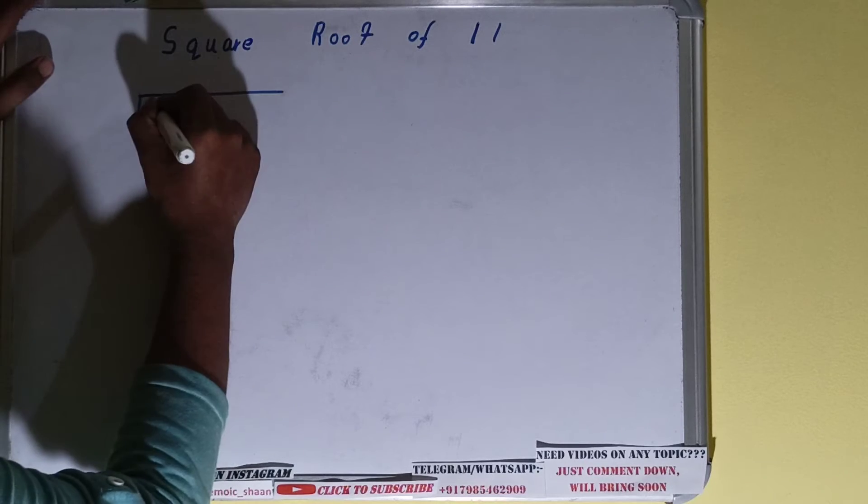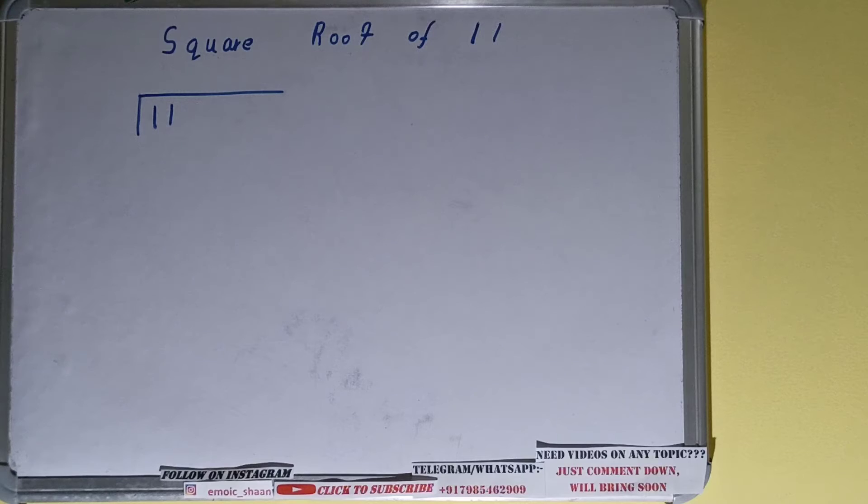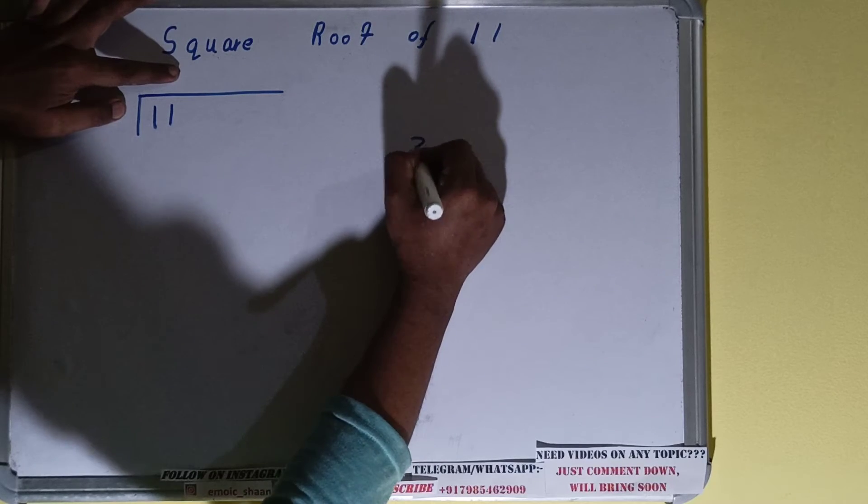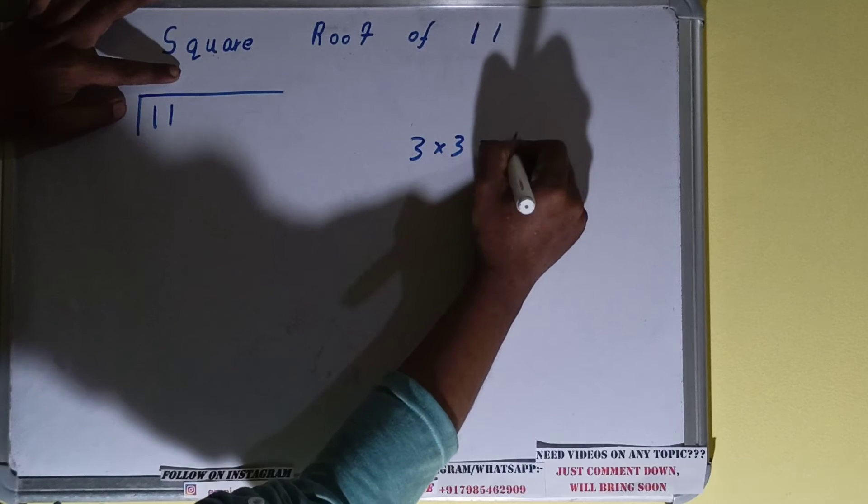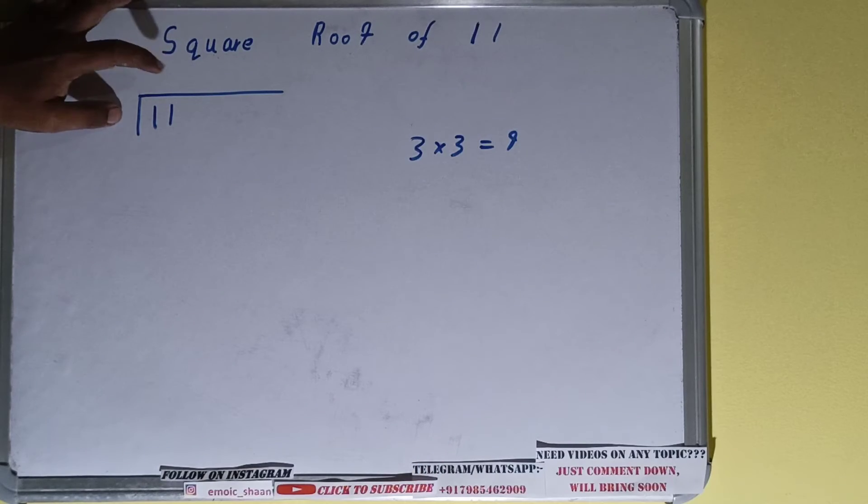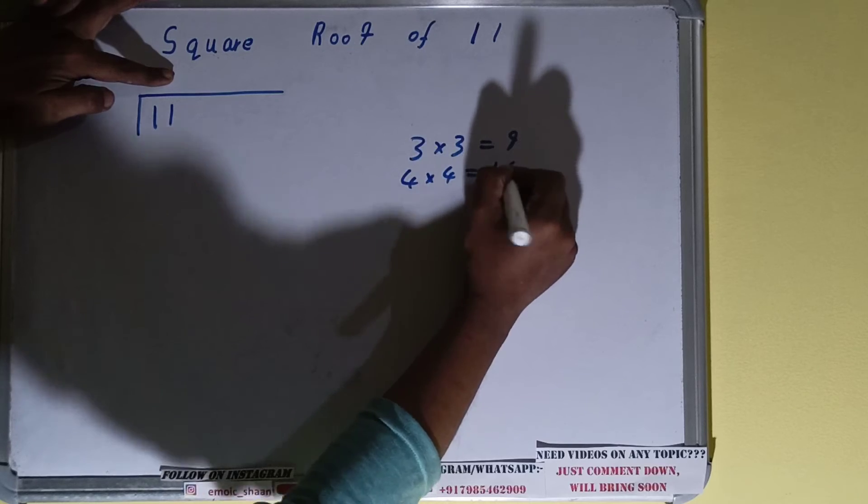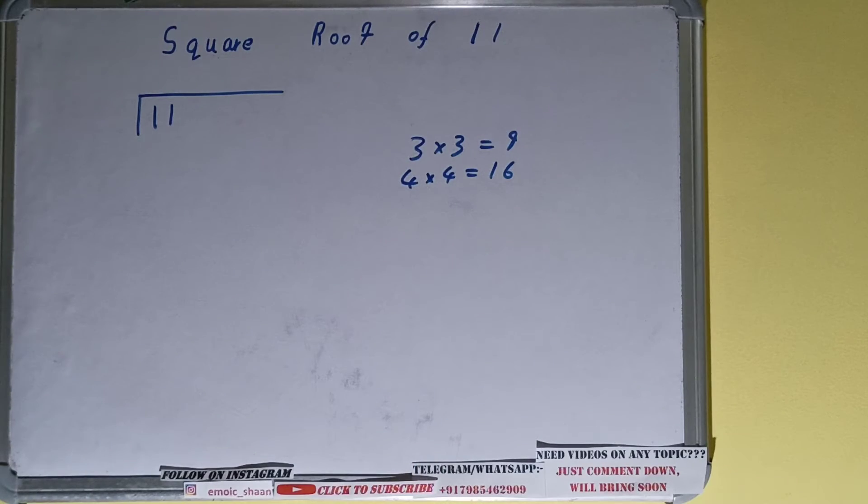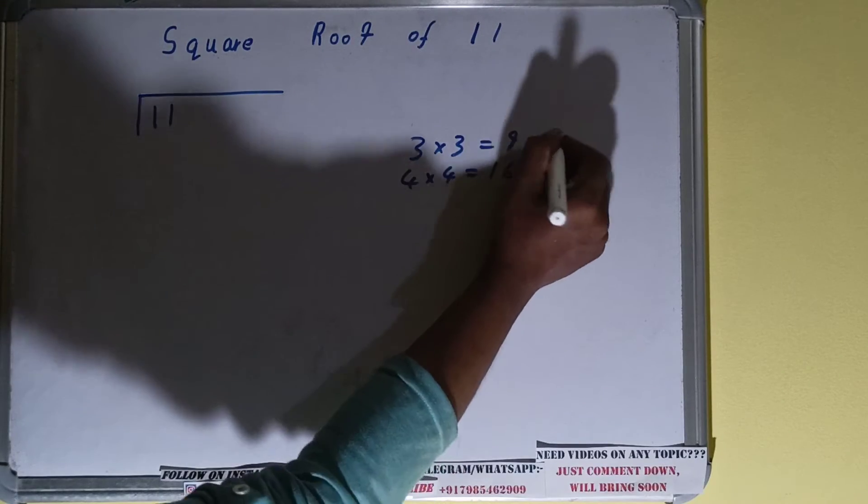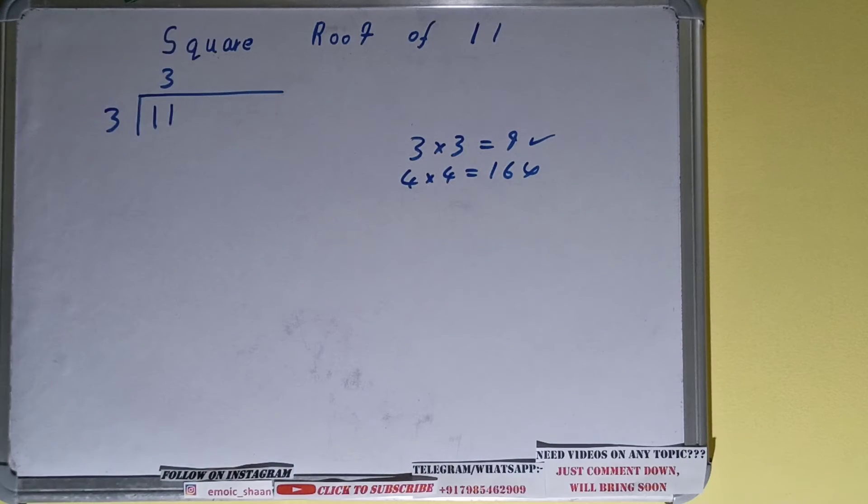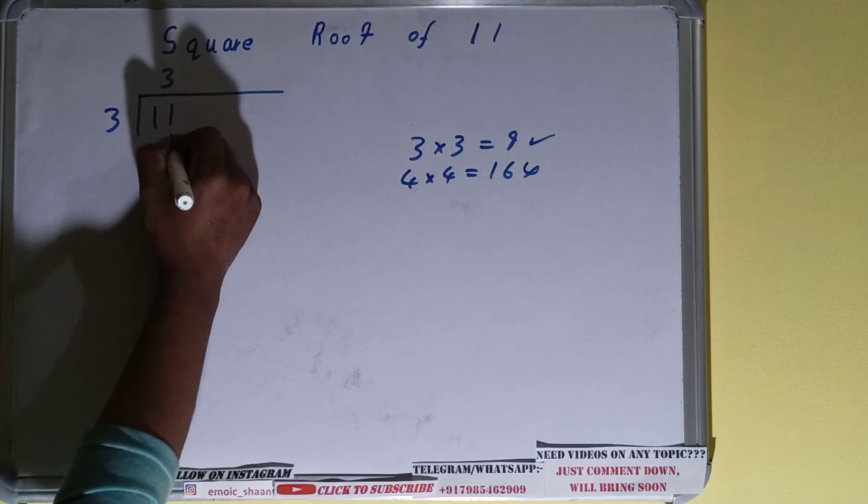First let's write 11 like this. The next thing we need to do is whatever divisor we take here, we have to take it as the quotient as well. So if we take 3 here, we have to take 3 here also. 3 into 3 is 9. If we take 4 here, we have to take 4 here also, that is 4 into 4 which will be 16. Now 16 is greater than 11 so we cannot use this. We have to use 3, which will give the answer 9, and we'll be left with 2.